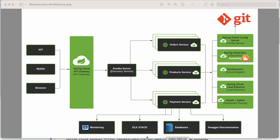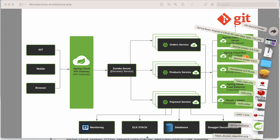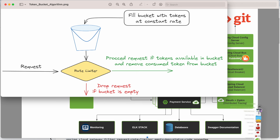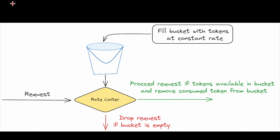Now I am going to talk about how Spring Cloud API Gateway will work as a rate limiter. Let me open one of the diagrams. First of all, what is rate limiting?